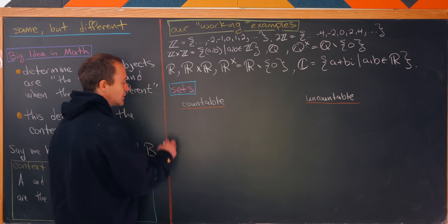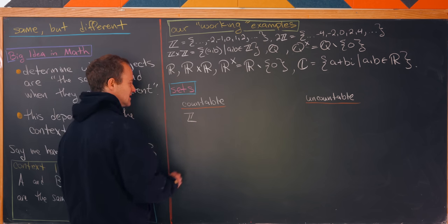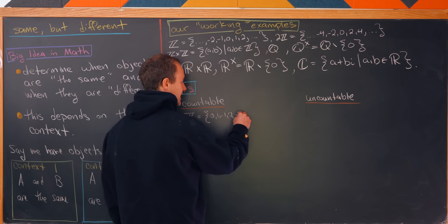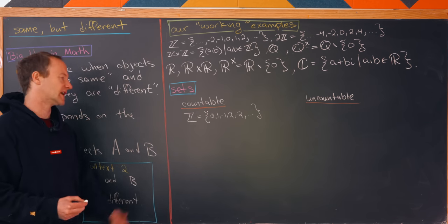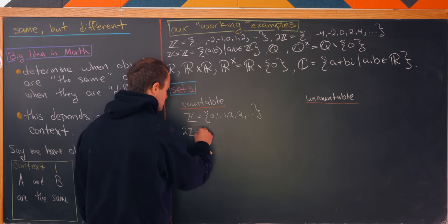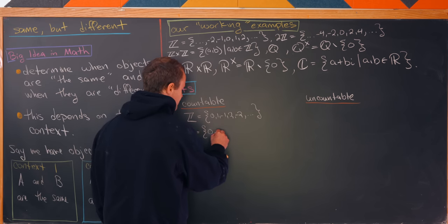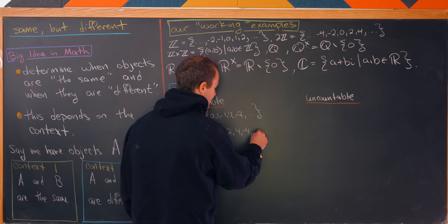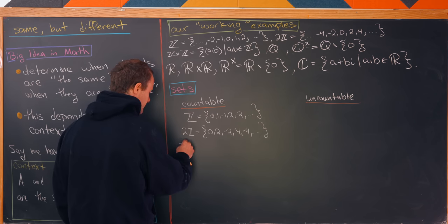The countable sets: it's well known that the integers are countable. You can list them as 0, 1, −1, 2, −2, … giving a clear assignment to the natural numbers. The even integers are also countable — a similar listing works: 0, 2, −2, 4, −4, and so on.